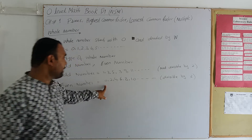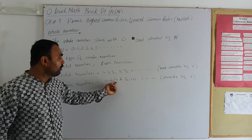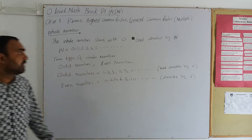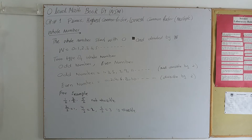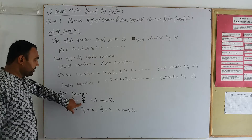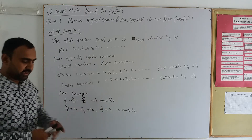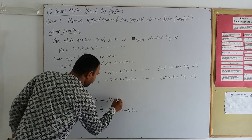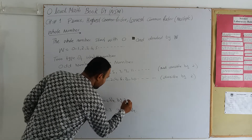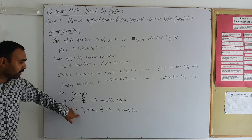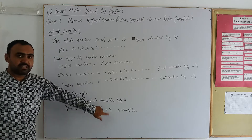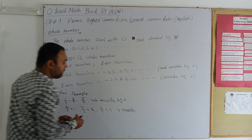Even numbers are 2, 4, 6, 8, and 10. For example: 1, 3, 5 are odd — not divisible by 2. Whereas 2 divided by 2 is 1, 4 divided by 2 is 2, 6 divided by 2 is 3 — these are divisible by 2, confirming they are even numbers.